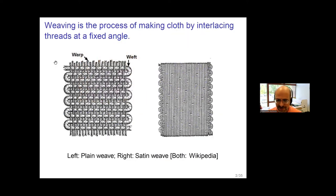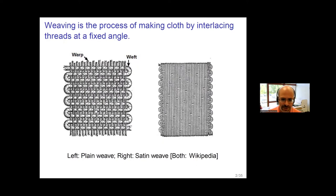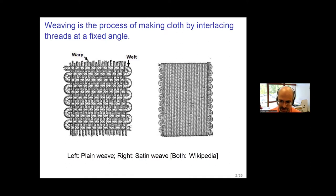So I want to say a little bit about weaving. Weaving is making cloth in a particular way by interlacing threads — two sets of threads usually. Weavers tend to talk about the warp threads, which go vertically along the dimension of the loom, and weft threads, which go back and forth tying the warp threads together. There are various patterns in which one can do this.